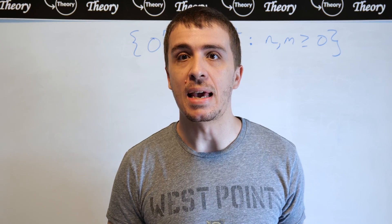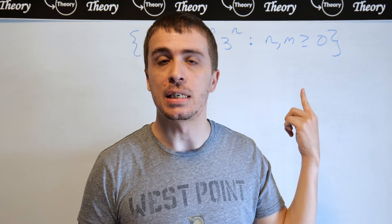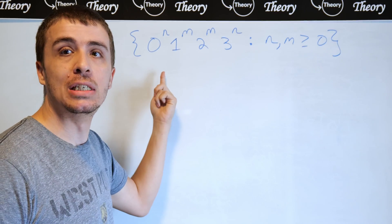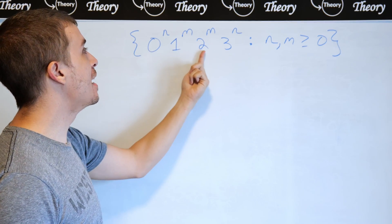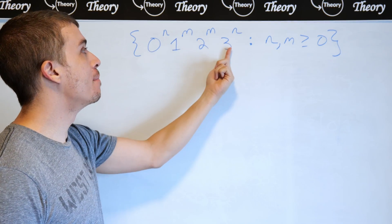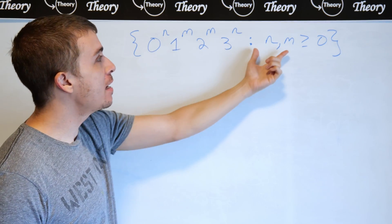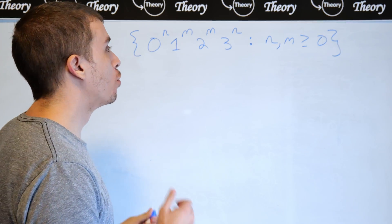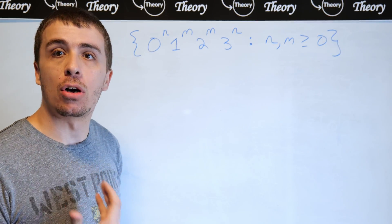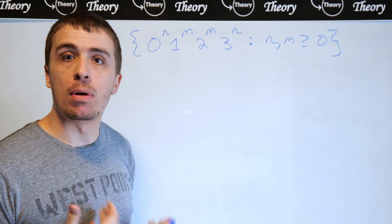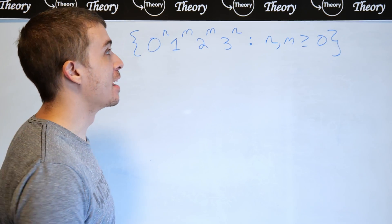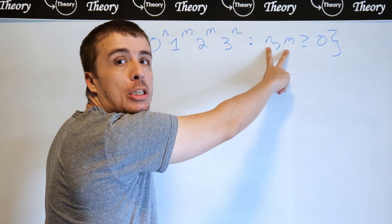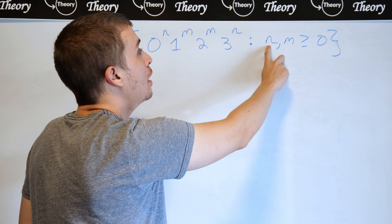We're going to make a context-free grammar for the language 0^n 1^m 2^m 3^n, where n and m are at least zero. One thing you should always be aware of when making a context-free grammar is any relationship between the counts.